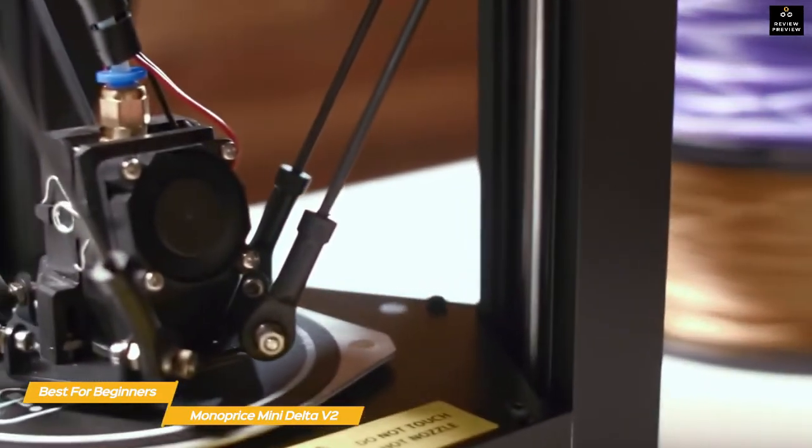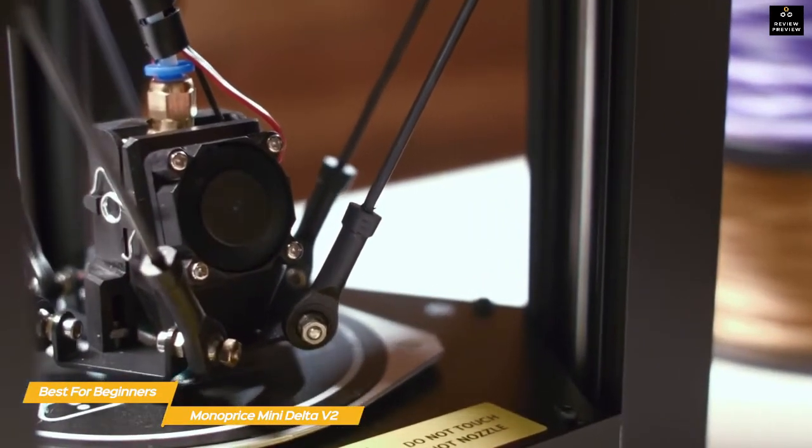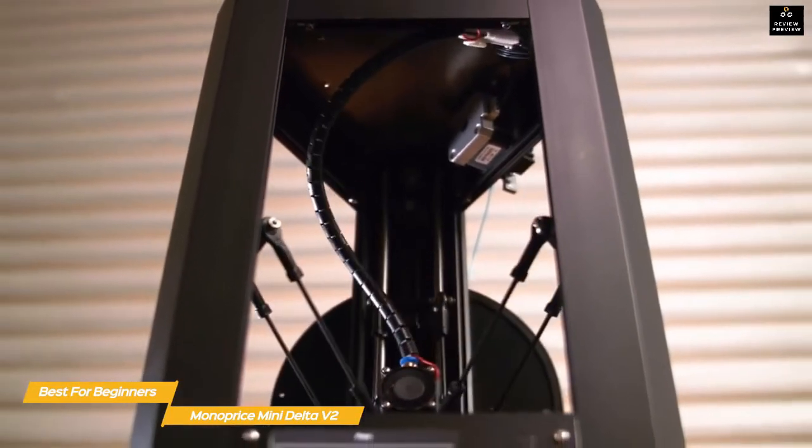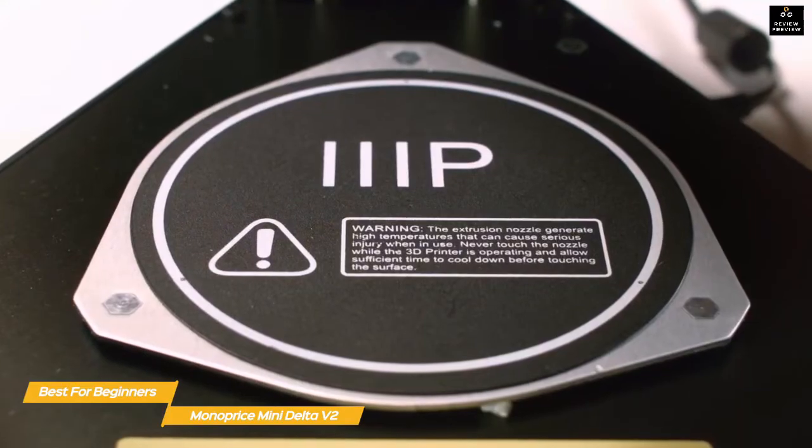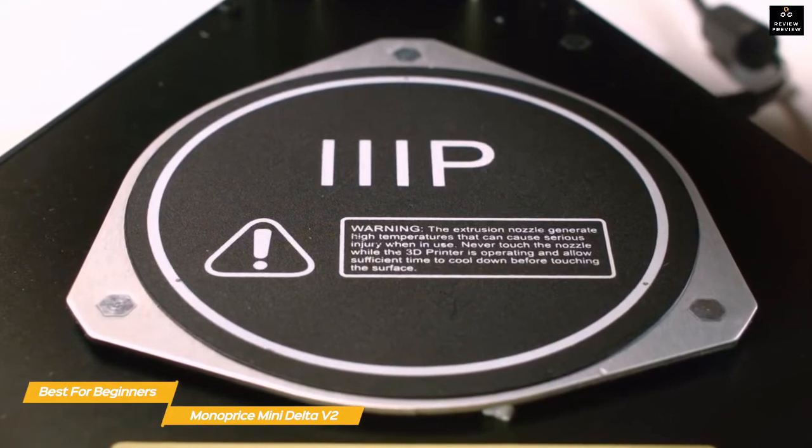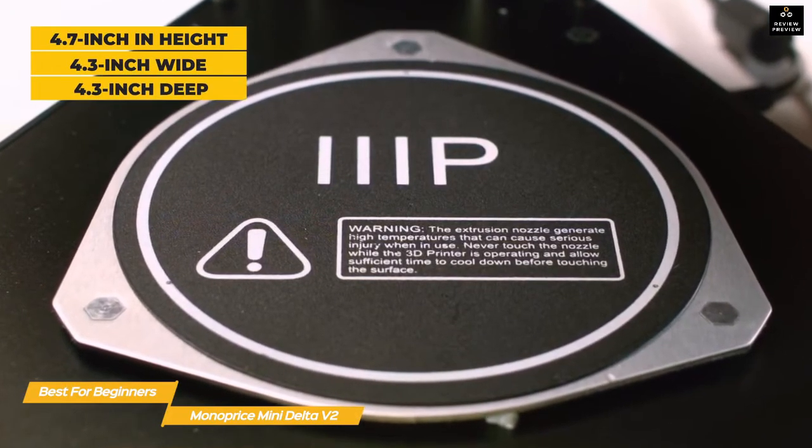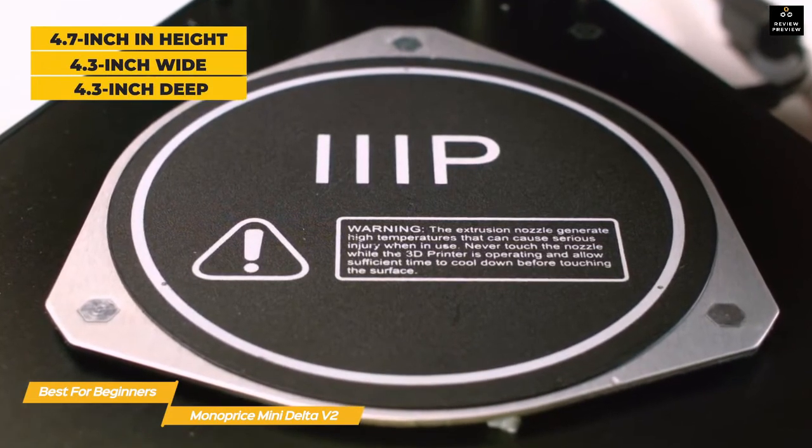The build features a sturdy matte black steel and anodized aluminum frame that's open on three sides. From above, the printer forms an equilateral triangle with cut-off corners. The circular print bed is held in place by three clamps and offers a maximum build area of 4.7 inches in height by 4.3 inches wide by 4.3 inches deep.